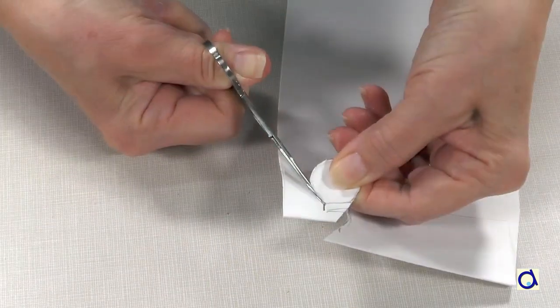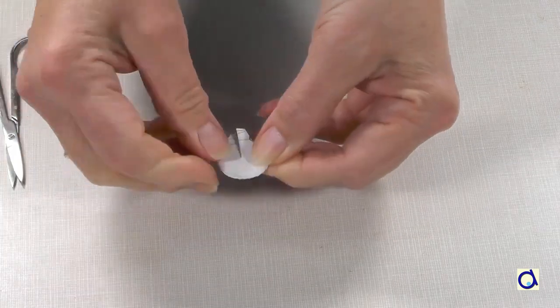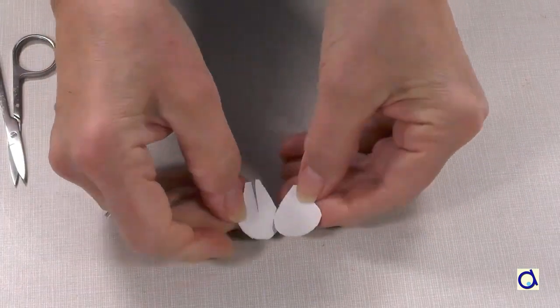Cut through both layers of bristol paper and make a slit in the middle. This will give you a pair of ears.